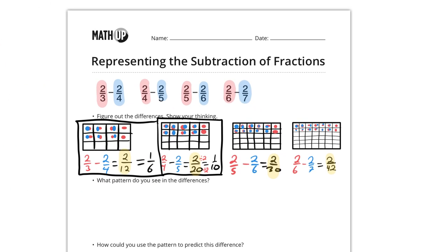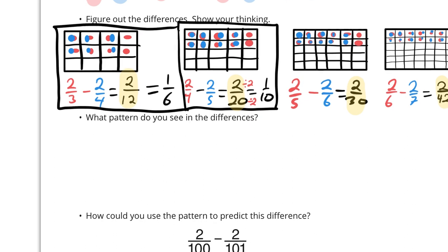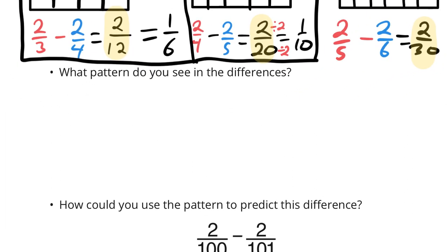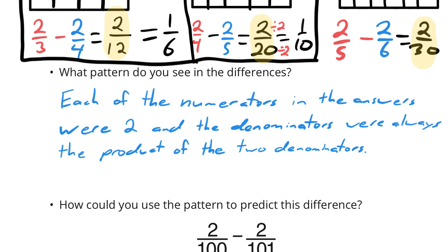And I can see that we've already answered the second question, which is, what pattern do you see in the differences? I might say this: Each of the numerators in the answers were two, and the denominators were always the product of the two denominators. See? Three times four is twelve. Four times five is twenty. Five times six is thirty. And so on.